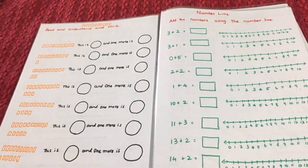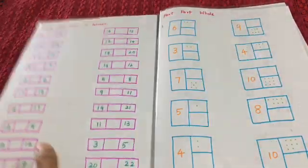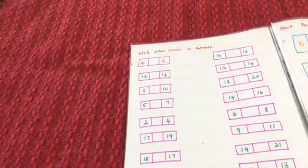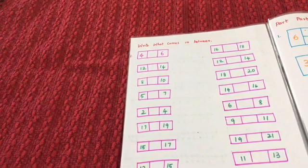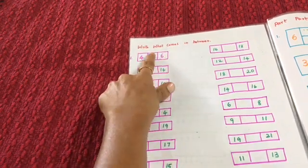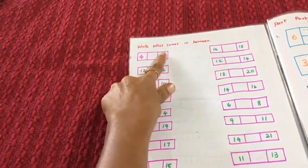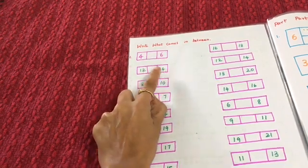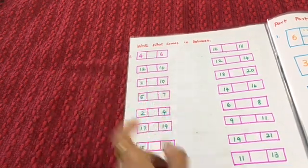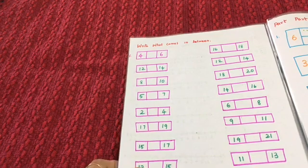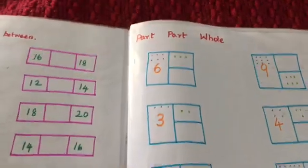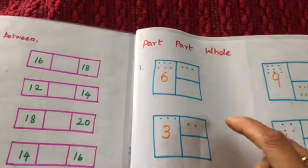Here he has to write what comes in between. I have written 4 and 6, so he writes number 5 in between. For 12 and 14 he writes 13, and for 8 and 10 he writes number 9.